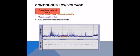Continuous low voltage is another severely abnormal trace. The upper margin is less than 10, the lower margin is less than 5, and the raw EEG also shows minimal activity.